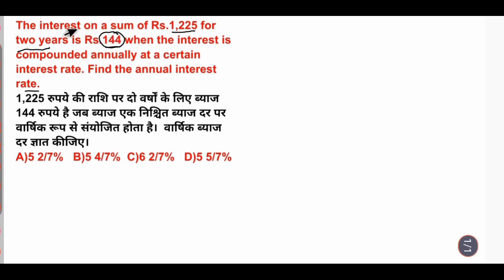144 is the interest on the sum of rupees 1225. This is the principal amount. To find the principal plus interest, we will do 1225 plus 144. Here is my amount, 1369. Now when we have to find the rate...